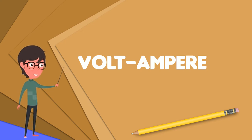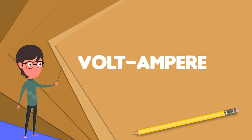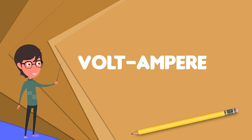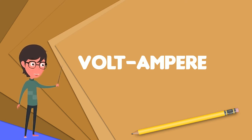Some devices, including uninterruptible power supplies, have ratings both for maximum volt-amperes and maximum watts. The VA rating is limited by the maximum permissible current, and the watt rating by the power handling capacity of the device.